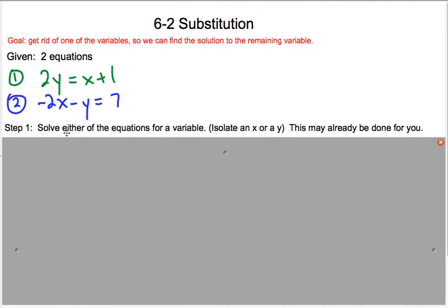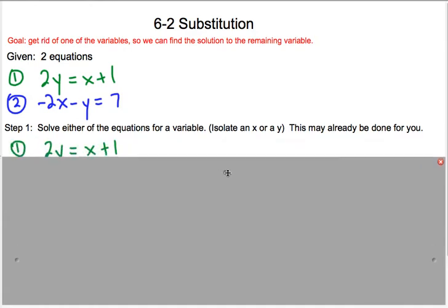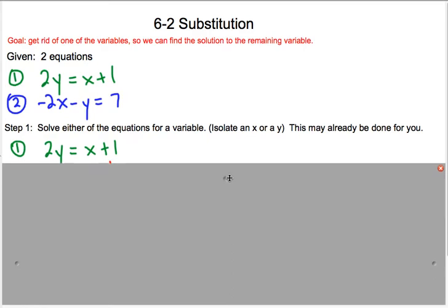Step 1: solve either of the equations for a variable, which means isolate an x or a y. This may already be done for you. Like, one of the equations might say x = y + 5, then you don't have to do step 1. But in this case, we do have to decide what to do.